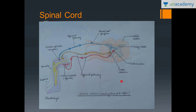The take-home message from this lesson: remember the structure of the spinal cord, that it gives rise to 31 pairs of spinal nerves, how the neurons are arranged in the spinal cord, that spinal nerves are mixed in nature, and the definitions and differences between monosynaptic and polysynaptic reflexes. Thank you for watching — that's it for this lesson.